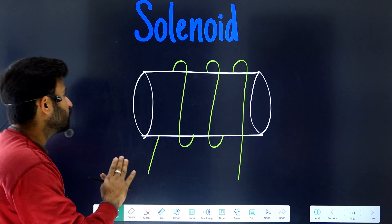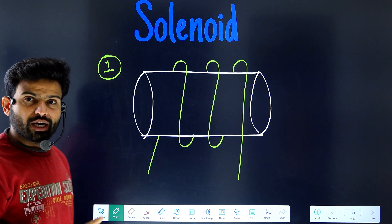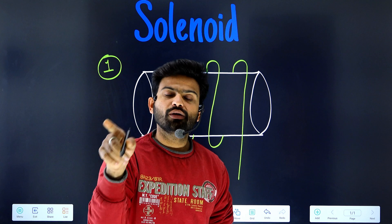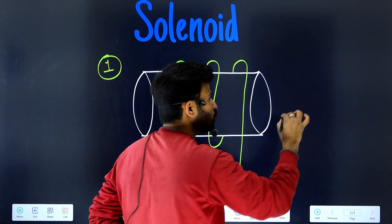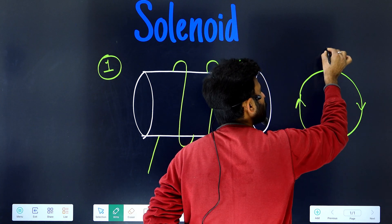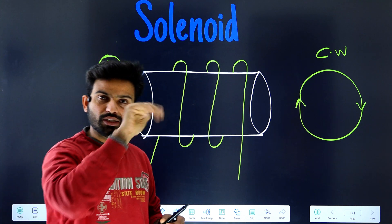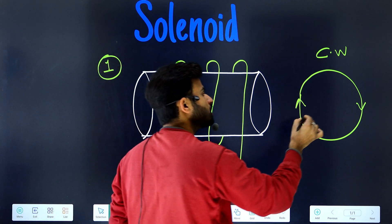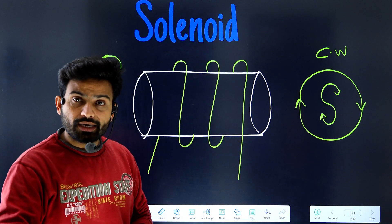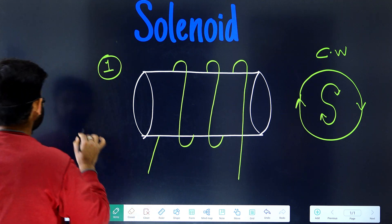This is the first case we are going to discuss. Before that, we need to understand how to find out the north pole and the south pole. If the current is going in a clockwise direction, then that end will be south. And if the current is going in an anticlockwise direction, then that end will be north.